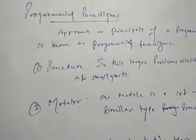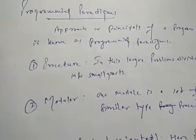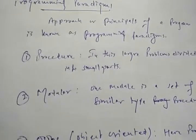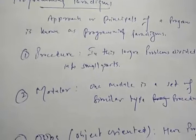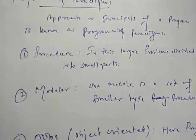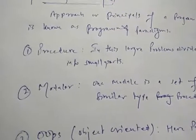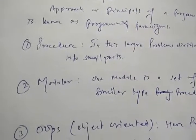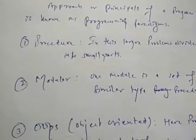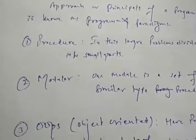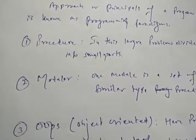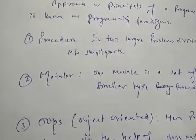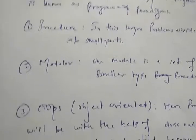The next topic is programming paradigms. Programming paradigms means the approach or principles of a program. There are three categories of programming paradigms: number one is procedural programming, second is modular programming, and third is OOP (Object-Oriented Programming).